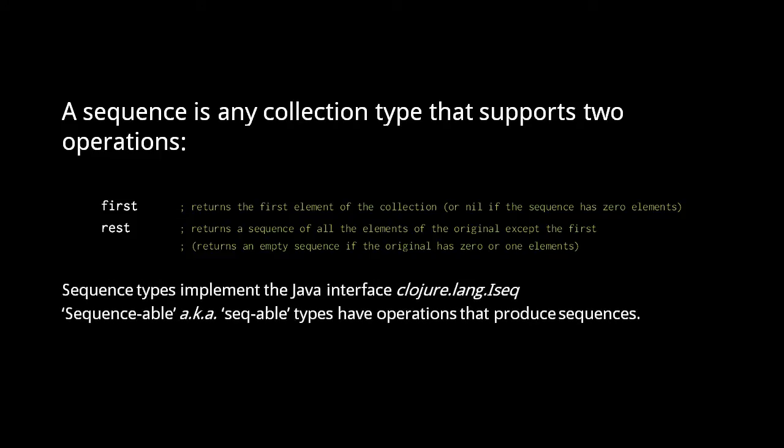Strictly speaking, only types which implement the Java interface Clojure.lang.ISeq are sequences. However, many collection types which do not implement this interface are considered sequenceable, or as we say seqable, because they have one or more operations which produce sequences.